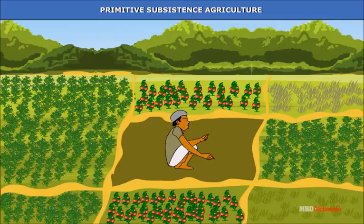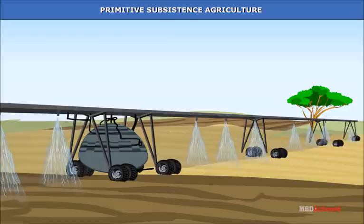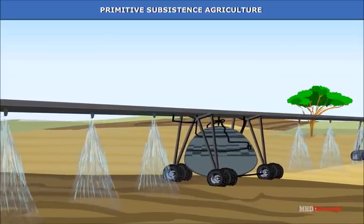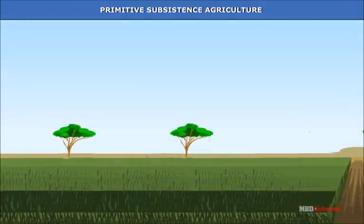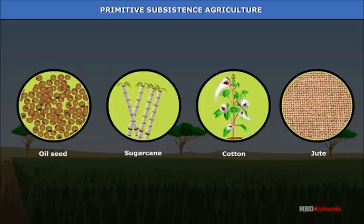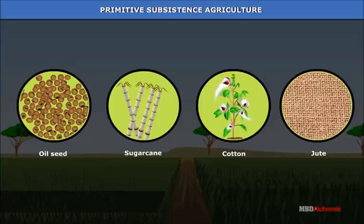Primitive subsistence agriculture: In subsistence agriculture, the farmers grow just enough crops for their own consumption and their family. They may also practice intensive agriculture. In places where irrigation is available, farmers now also cultivate cash crops like oilseeds, sugarcane, cotton and jute. In this way, subsistence agriculture has given way to commercial agriculture.